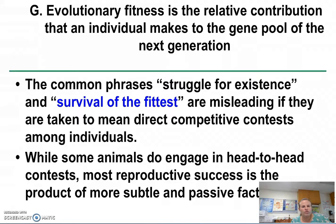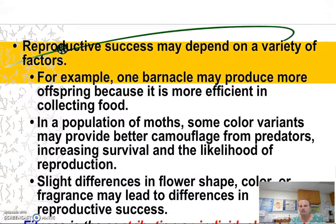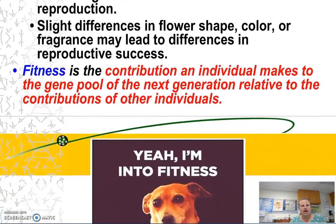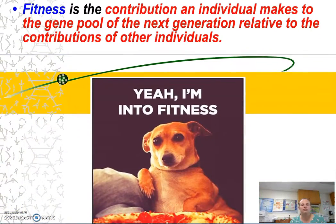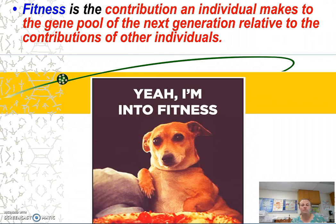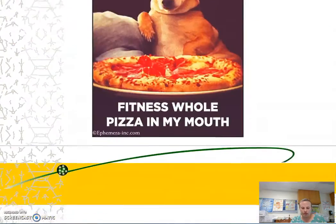When discussing Darwin, we learned that he coined the phrase 'survival of the fittest.' But what does it mean to be fittest? Does it mean being the strongest, the fastest, the smartest? In terms of evolution, fittest does not necessarily mean those things. Fittest means being an organism best adapted to your environment, making you more likely to survive, reproduce, and pass on those better-adapted characteristics to your offspring — contributing favorable alleles to the gene pool of future generations.